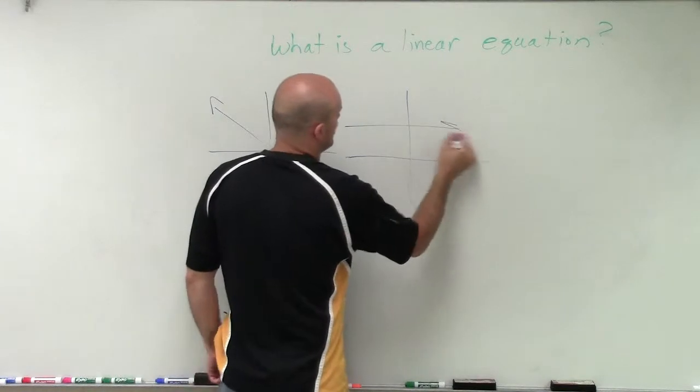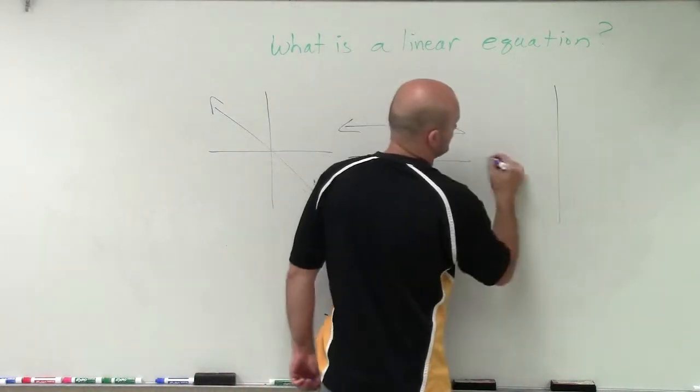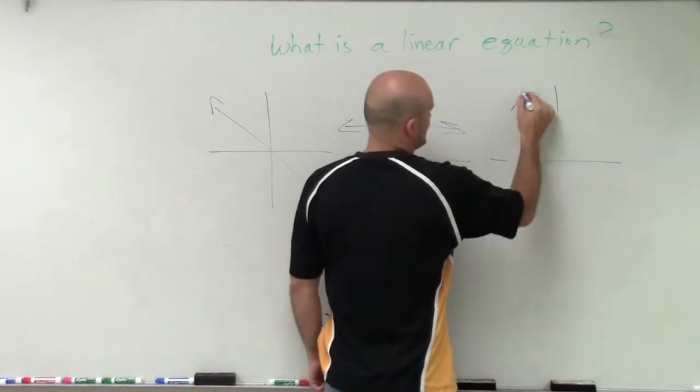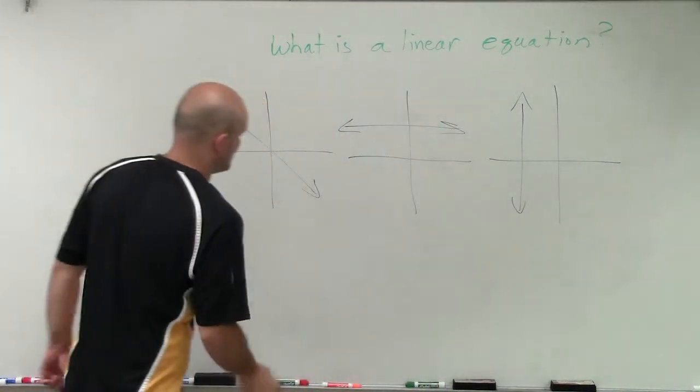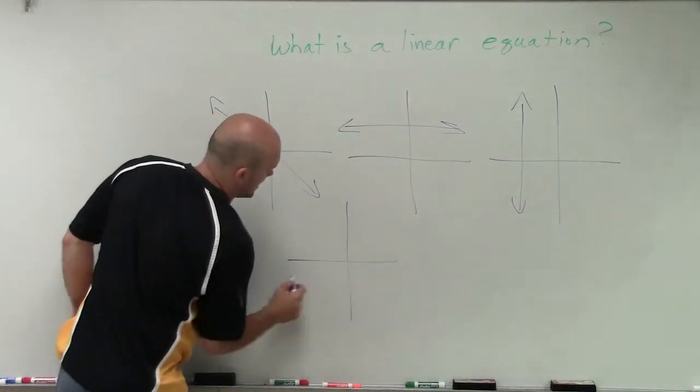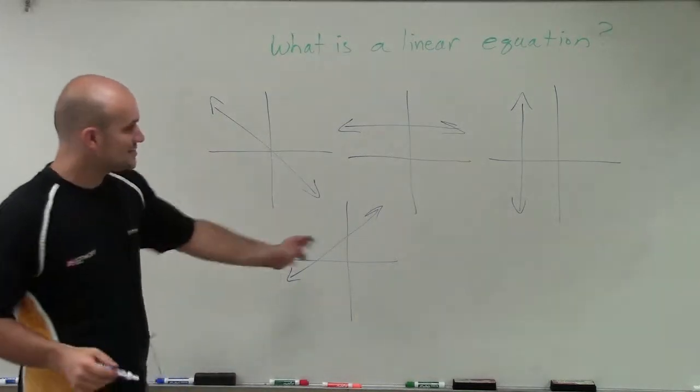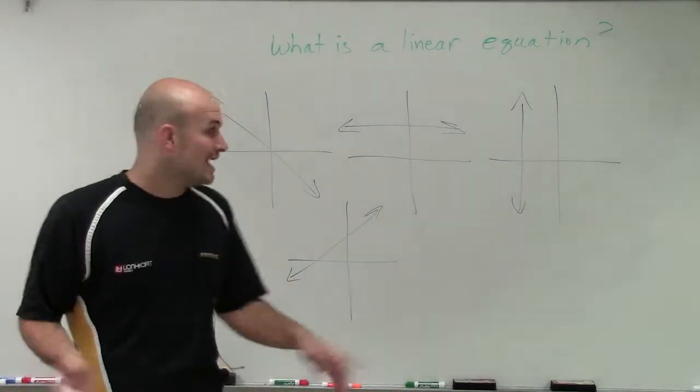Now these lines can have all certain types of slope. They can be vertical, they can be horizontal, they can have negative slope, and they could have positive slope. So these little lines with the arrows, those are going to be our lines.